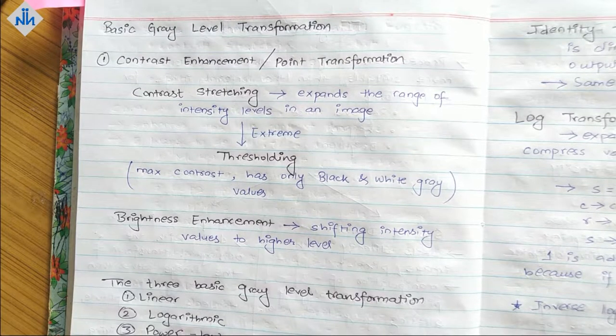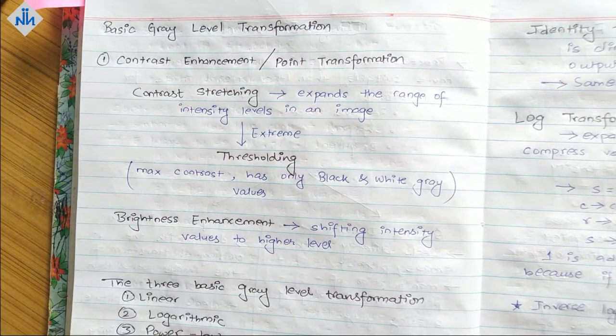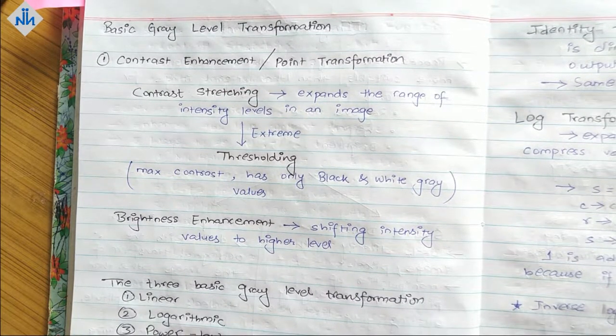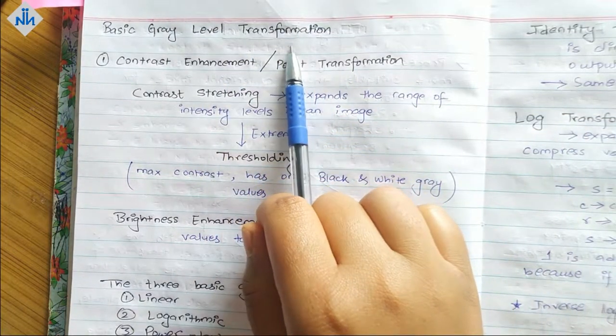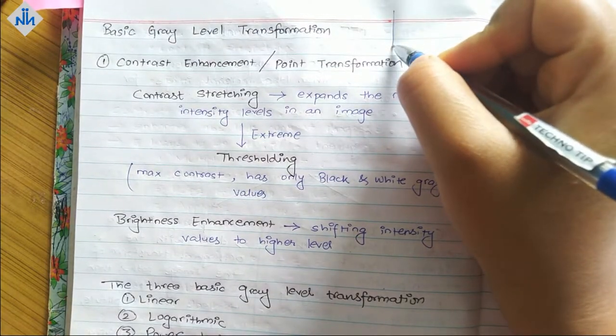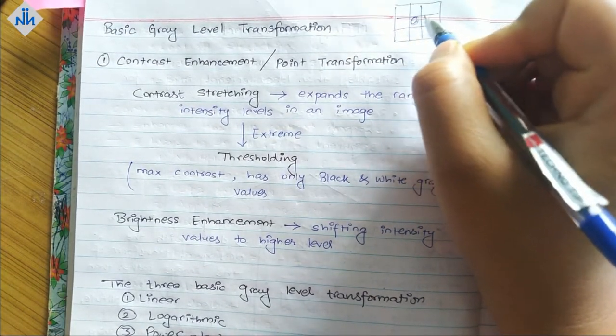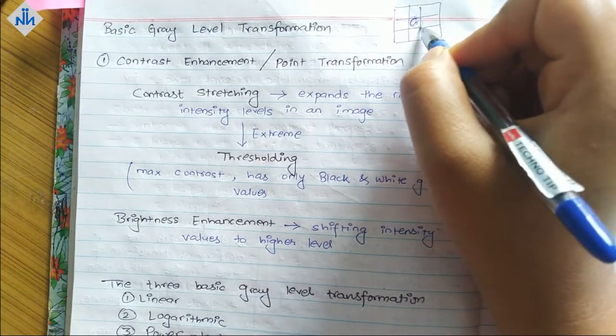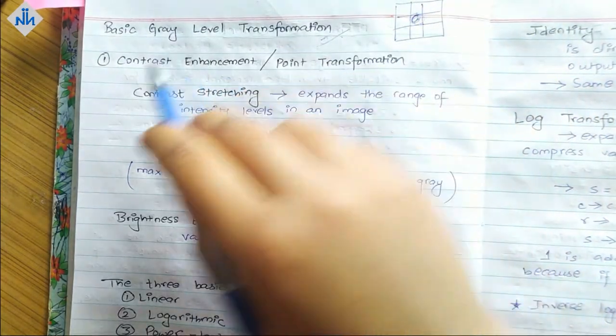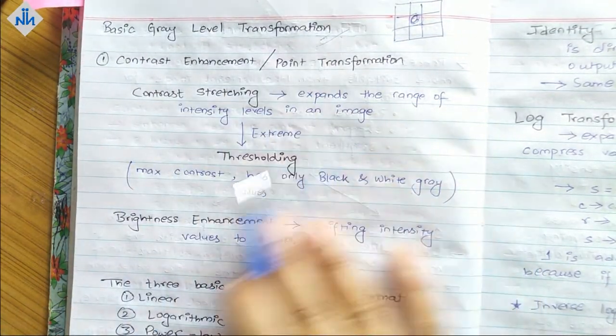Hello everyone and welcome back to Notes Naka. In this video we are going to talk about spatial domain and basic gray level transformation. In spatial domain spatial image enhancement, we work with single pixels. We can change the gray level of a single pixel. We are talking about basic gray level transformation. The first technique is contrast enhancement, also known